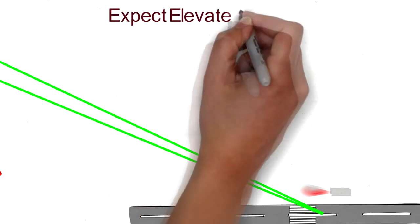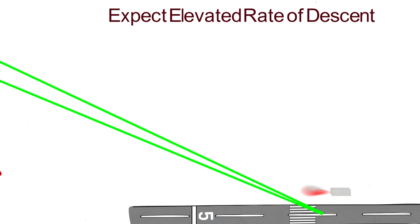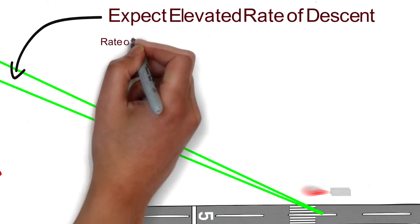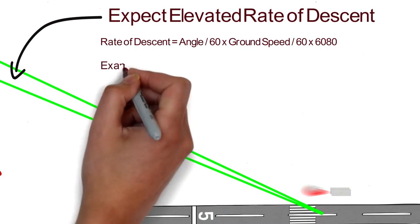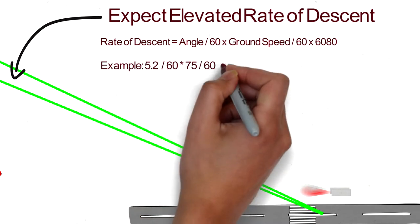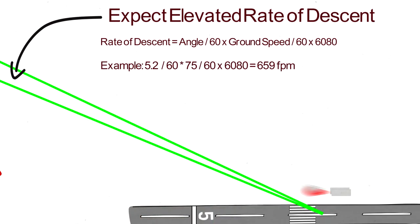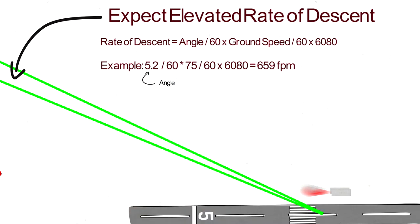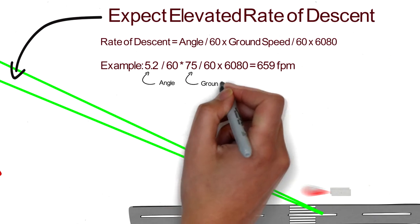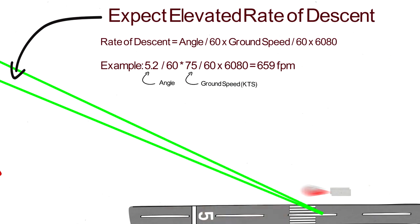Because of the increased glide slope angle, you can expect an elevated rate of descent from what you may be used to. This rate will vary as it's based on ground speed and not air speed. Different aircraft require different speeds and of course winds are a factor. Here I've provided an example of my personal descent rate based on a 75 knot ground speed. Feel free to plug in your numbers and see what you come up with.